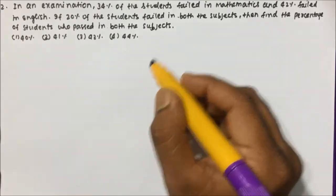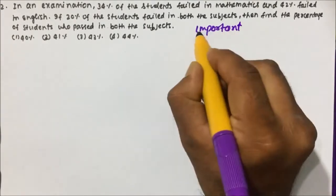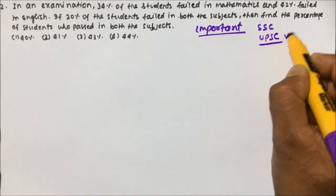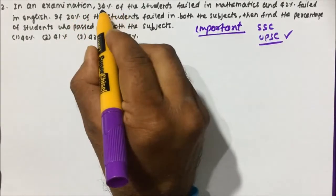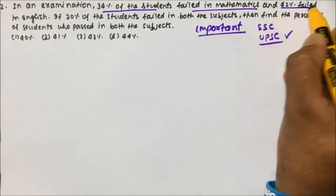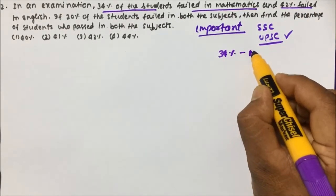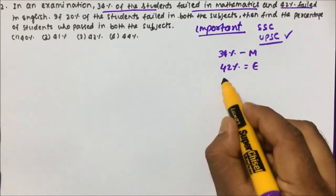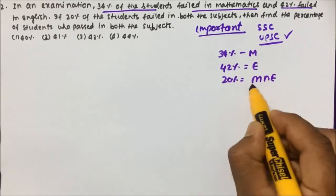Let's see question number 2. This is a very important question that is usually asked in exams like SSC and UPSC — these kinds of questions are very common. In an examination, 34 percent of the students failed in mathematics, 42 percent failed in English, and 20 percent failed in both maths and English.